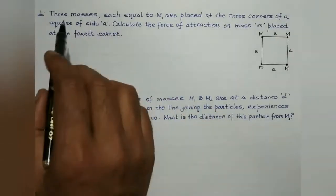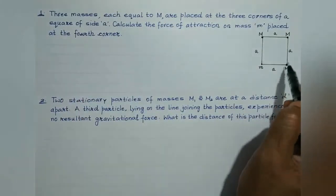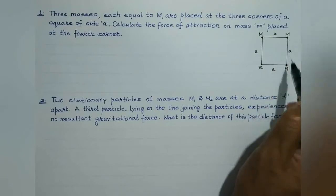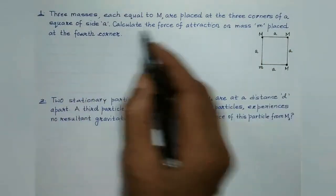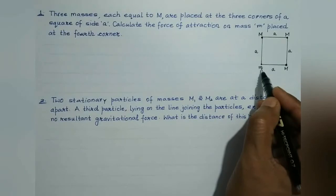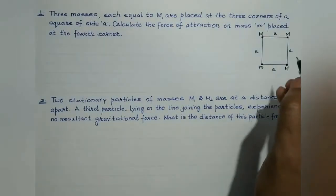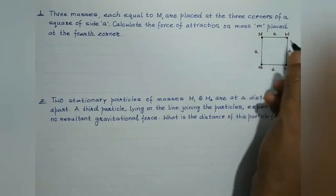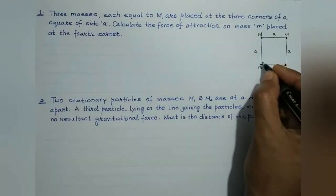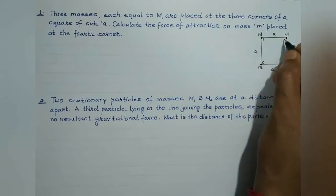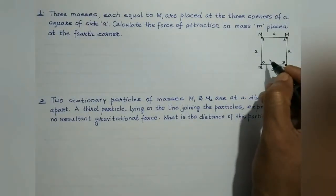Let us attempt the first numerical. Three masses, each equal to M, are placed at three corners of a square of side A. Calculate the force of attraction on mass m placed at the fourth corner. Let us assign numbers: the body where the net force is calculated is labeled 0, and the other bodies are labeled 1, 2, and 3. We apply the principle of superposition.